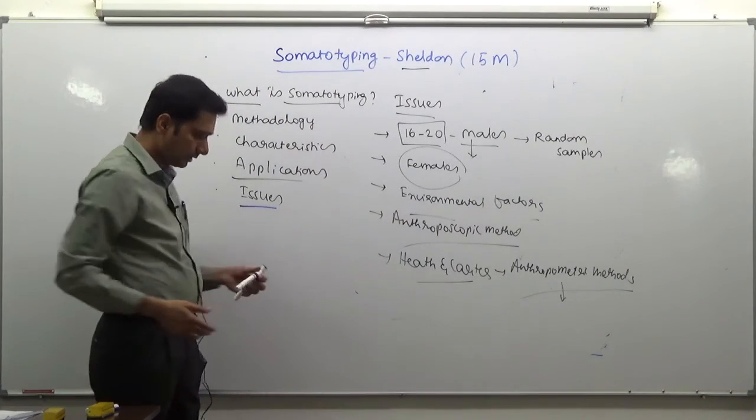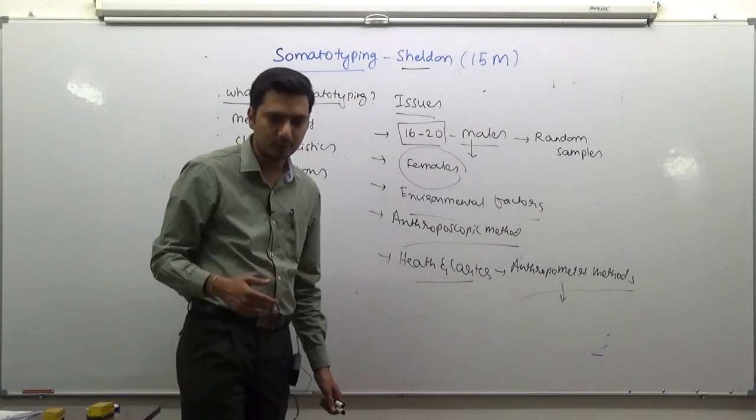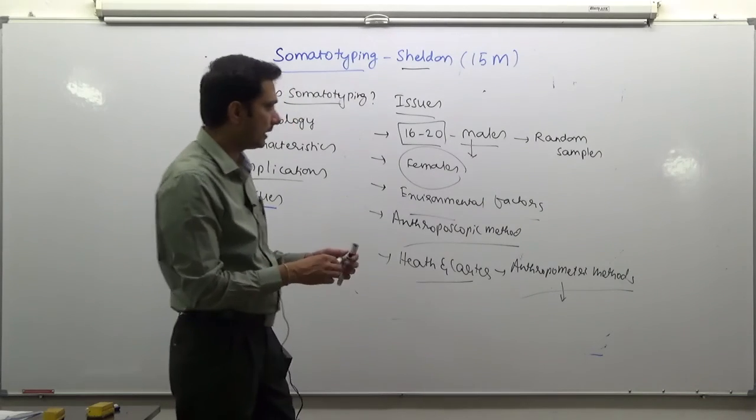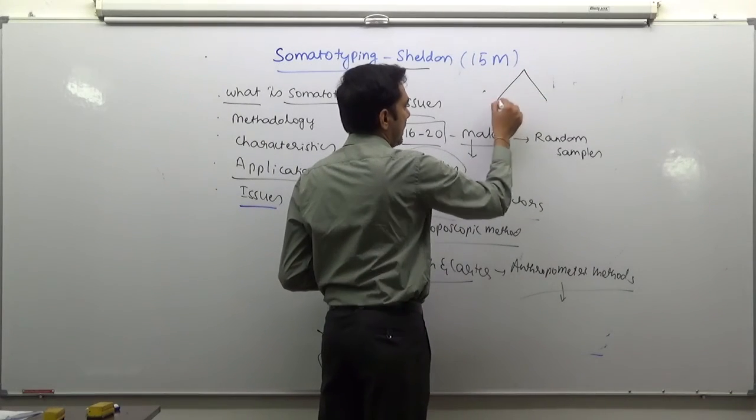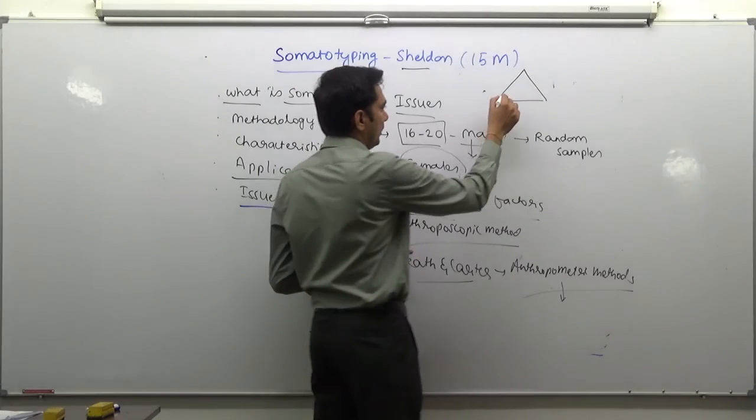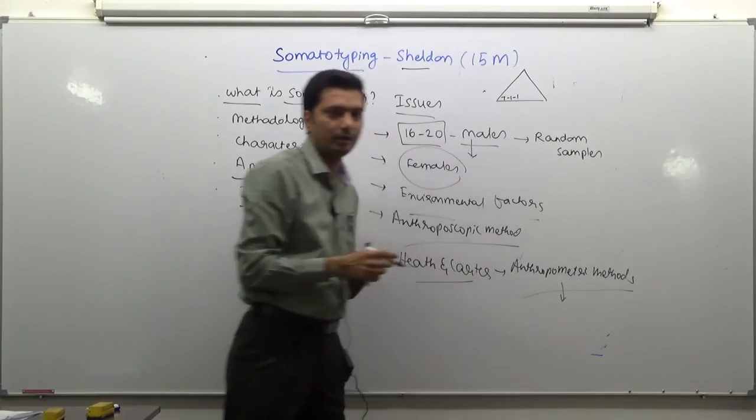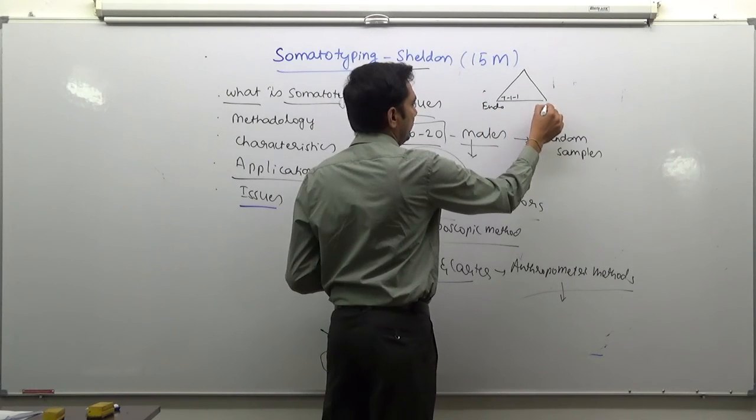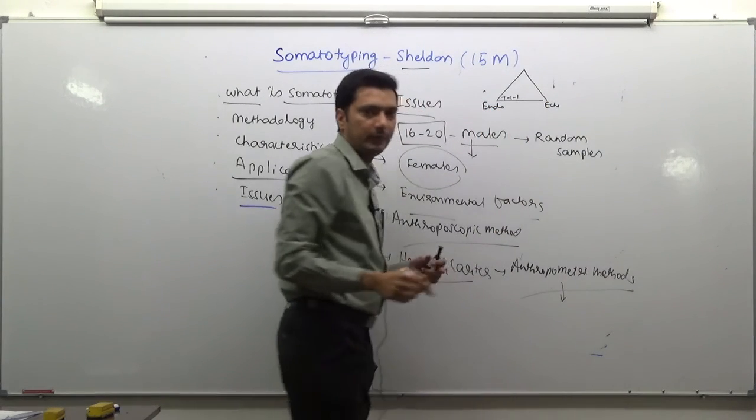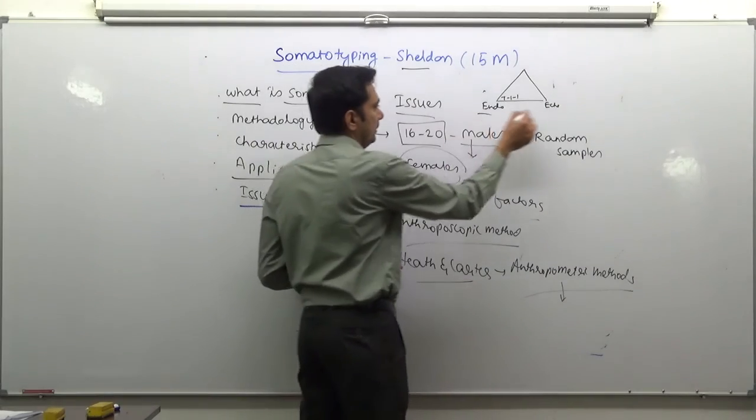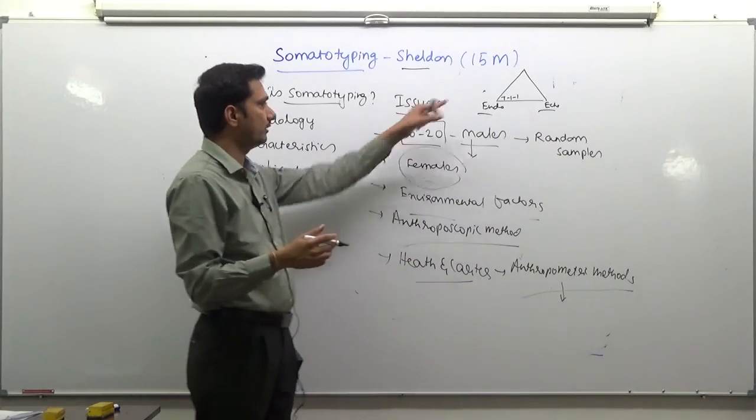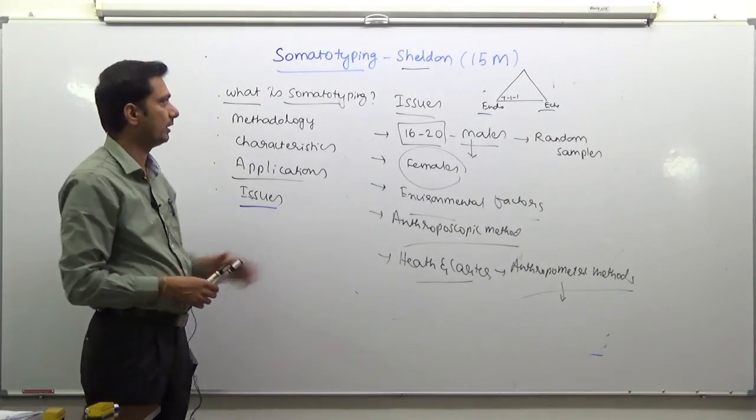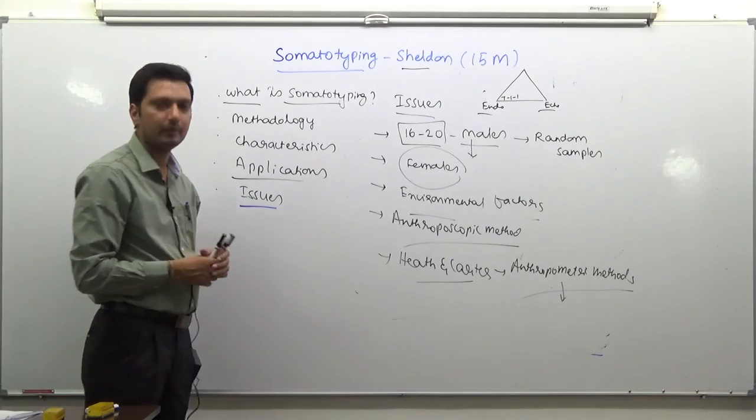These are functional issues. I think about another structural issue. In the triangle we've seen, it looks like a three-dimensional model. But notice that from endo to ecto, from fat to lean, it is a continuum. We notice continual change. It is not a three-dimensional factor. Structurally, there is a flaw in this method. You can discuss all these aspects related to somatotyping given by Sheldon for a 15 marker. Thank you.